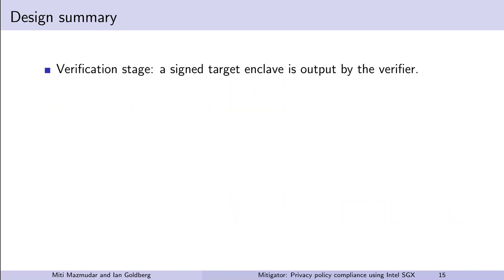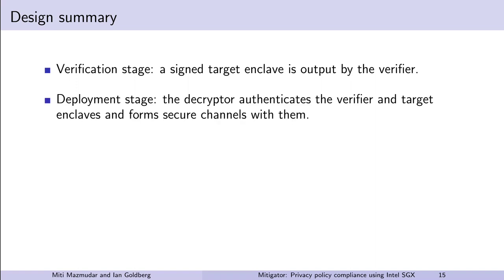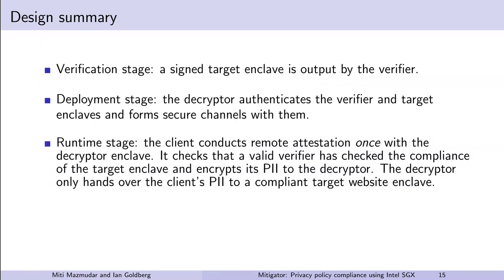In summary, in the verification stage, a signed target enclave is output by the verifier. In the deployment stage, the decryptor authenticates the verifier and target enclaves and forms secure channels with them, and sends authenticated information to the target enclave. In the runtime stage, the client needs to conduct remote attestation with the decryptor enclave behind each Mitigator-supporting website the first time the user visits it until the decryptor code base changes. Importantly, the client does not need to repeat these remote attestations every time the website code or the verifier code changes. Every time the user visits the website, the client ensures that a valid verifier enclave has checked compliance of the target, and then sends encrypted personally identifiable information of the user to the decryptor. The decryptor only hands over the client's plaintext PII to a signed and verified target website enclave.